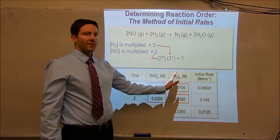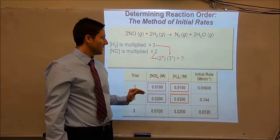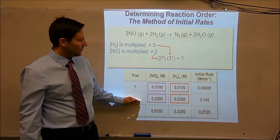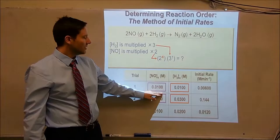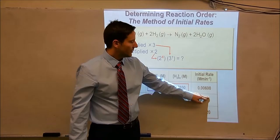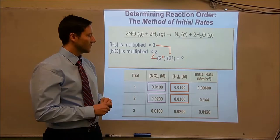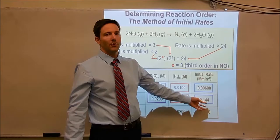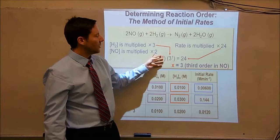Now that we know what the order is of one of the reactants, we can use that information to solve for the order of the other reactant. Using the experimental data again, between trial one and trial two, there is a tripling of the initial concentration of hydrogen, a doubling of the initial concentration of nitric oxide, and we have to figure out what that does to the initial rate of the reaction. It turns out the initial rate increases by a factor of 24 going from trial one to trial two.